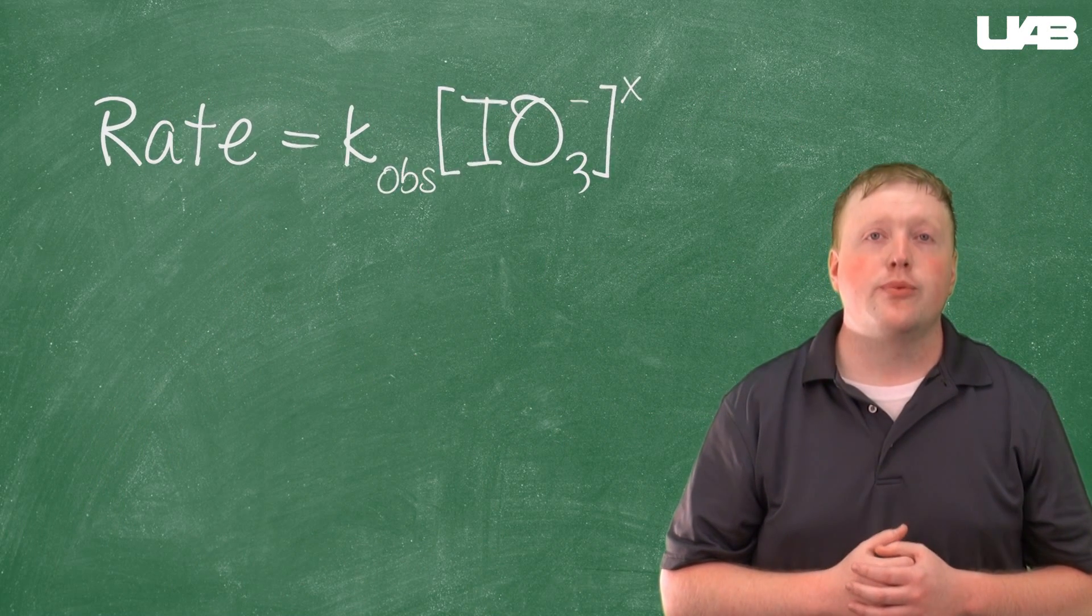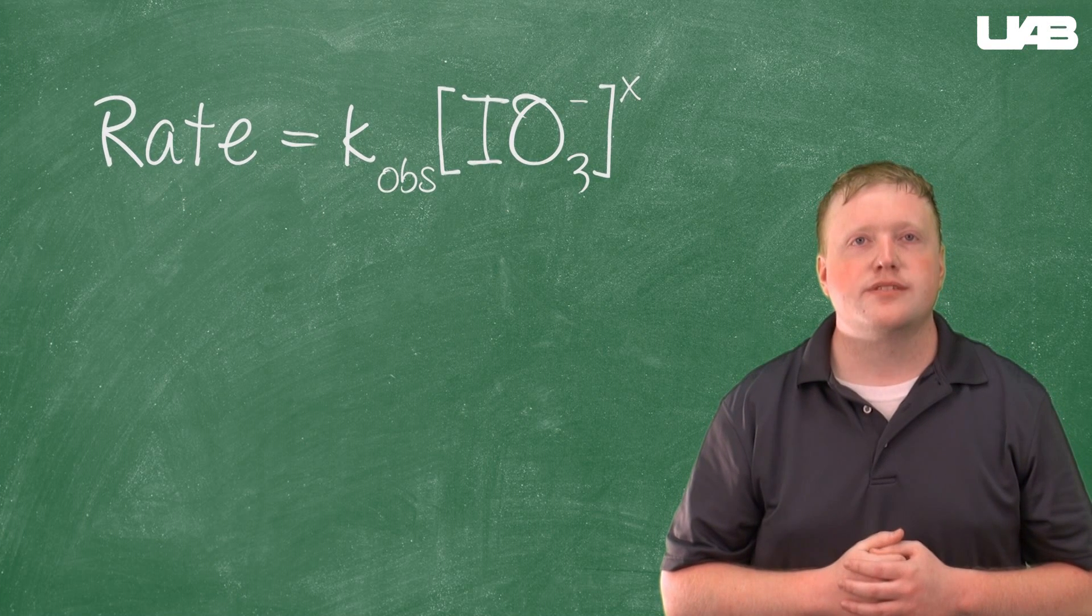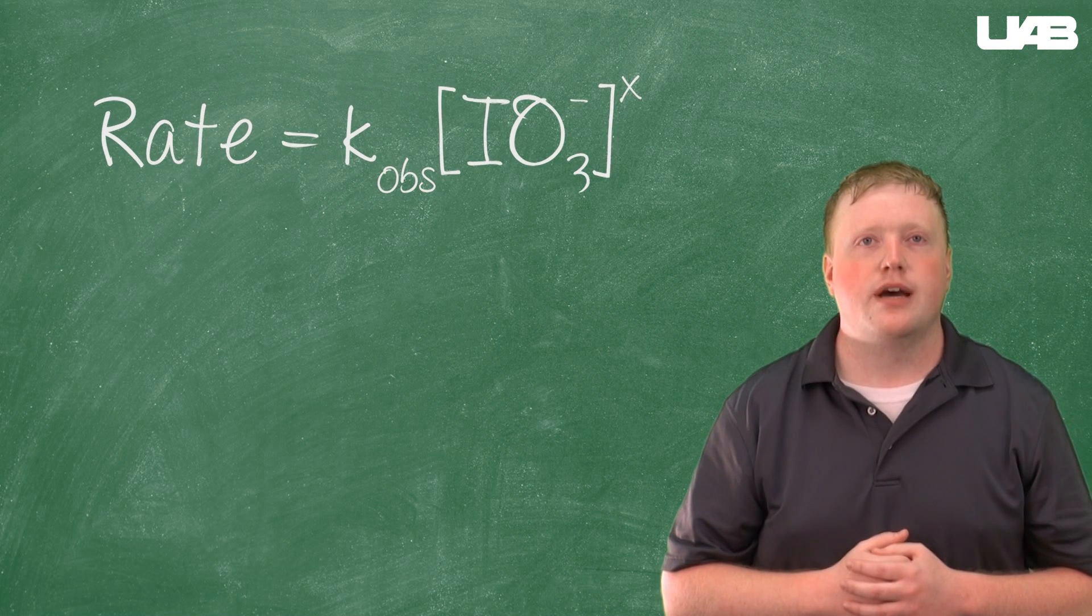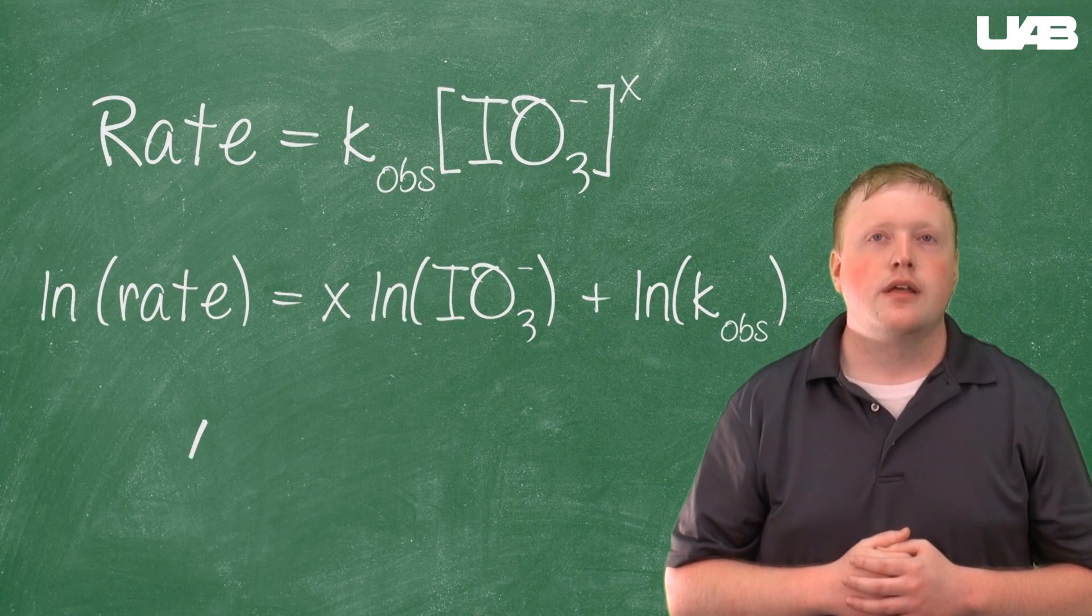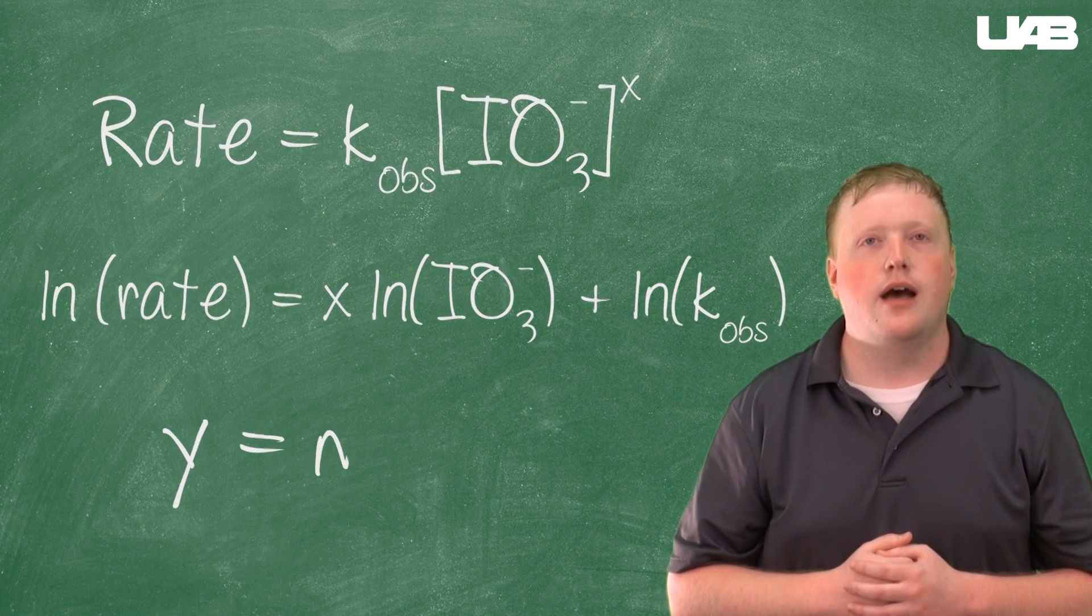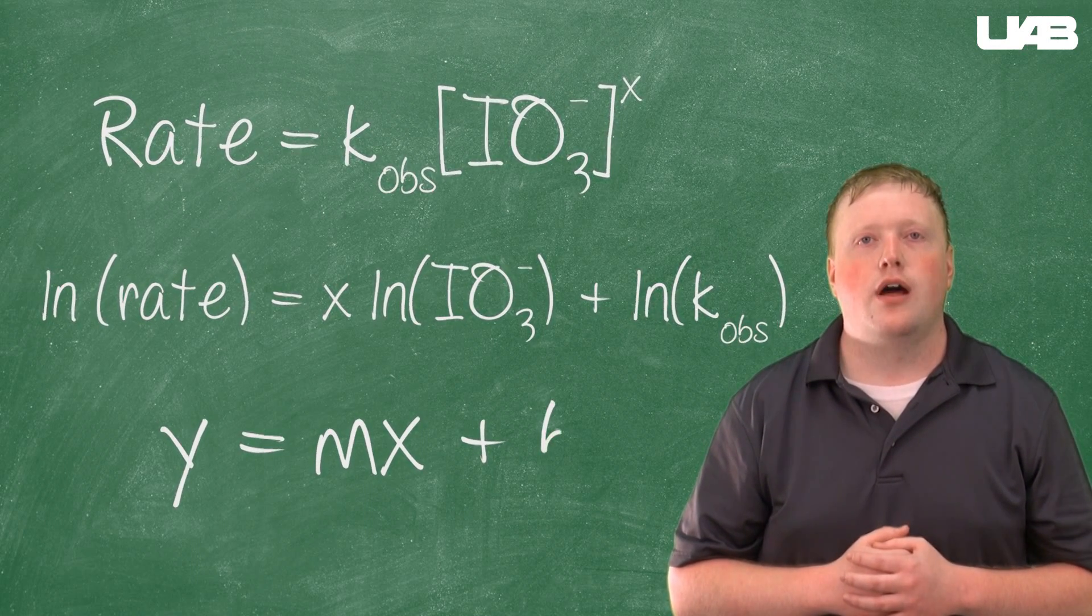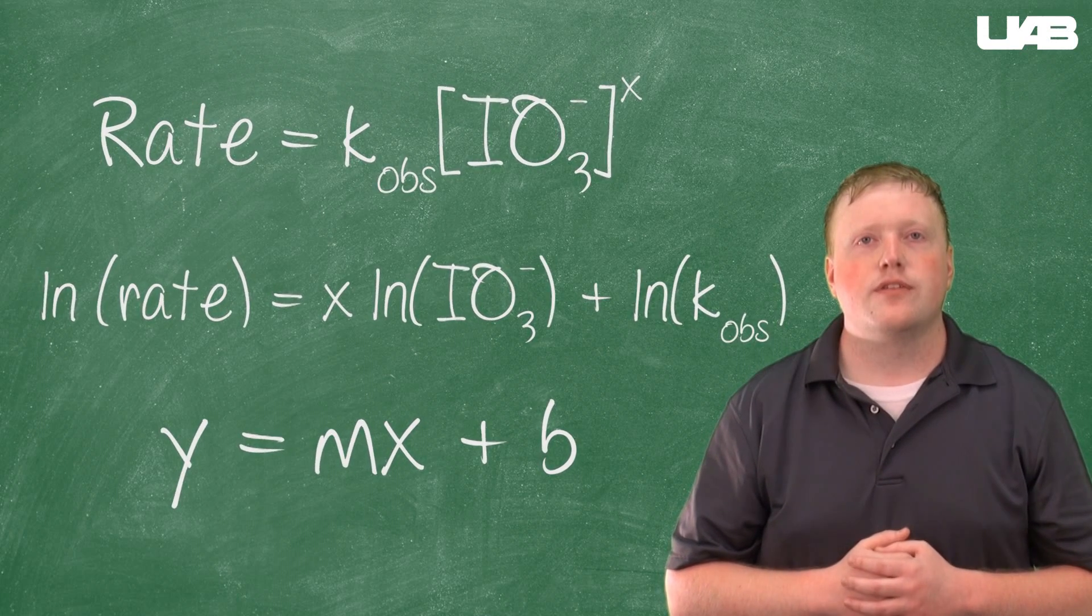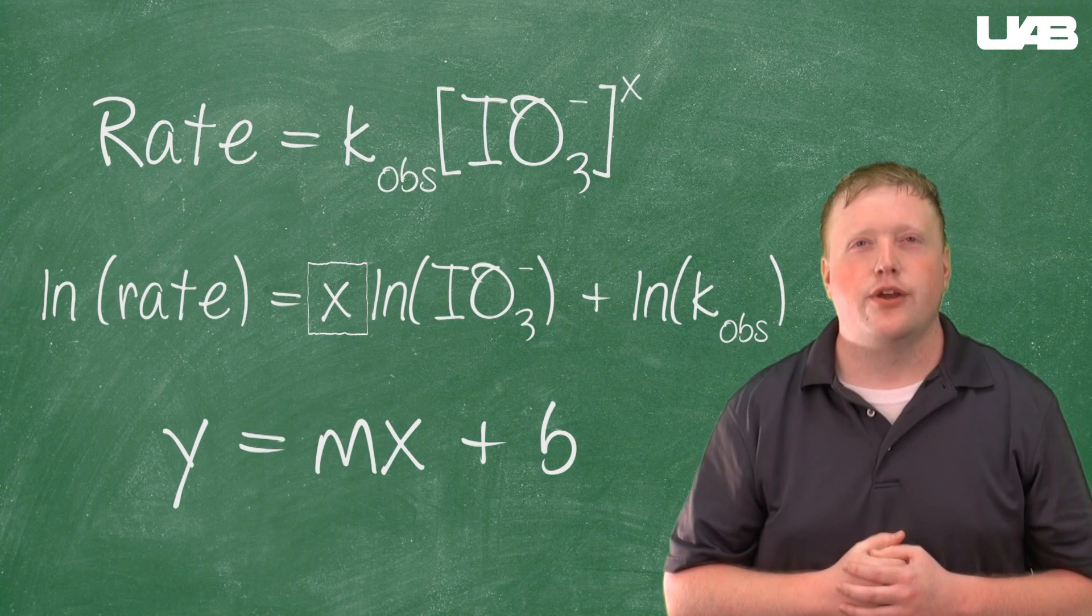If we go back to the rate law that we have, we can manipulate this into an equation that reflects the graph of our data by taking the natural log of both sides of the equation, which gives us this. The natural log of the rate equals x times the natural log of the concentration of iodate plus the natural log of K obs. This will mean that the slope of the graph that you will make will be equal to the x that is here in the rate law.